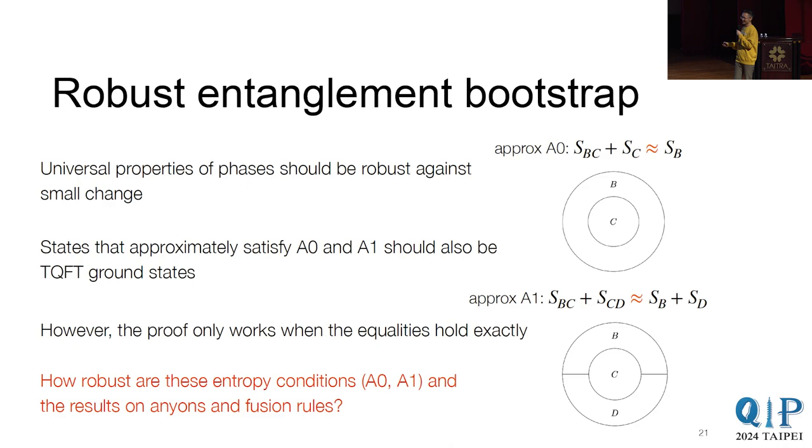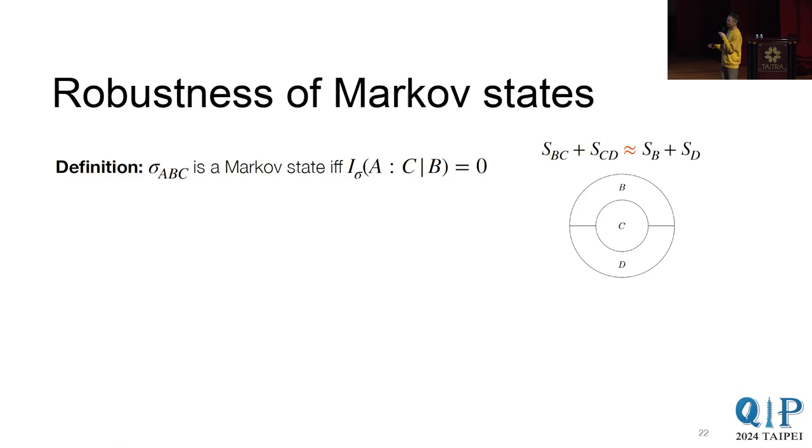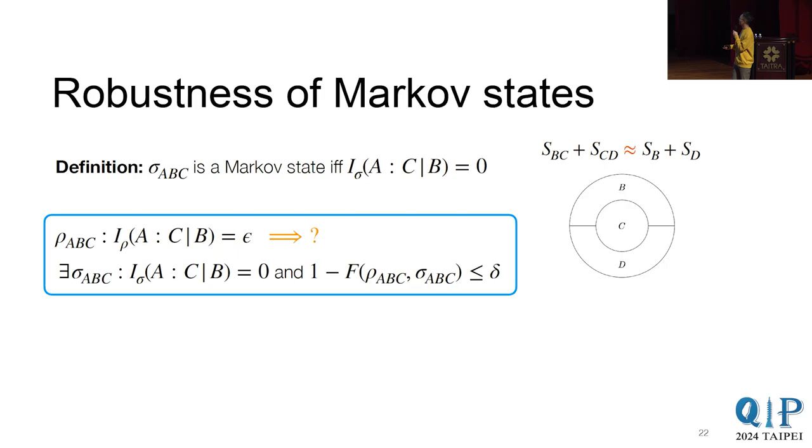However, their proof only works when things are exact because they really rely on these structure theorems that tells you how the state exactly looks like. So now the question is, can we show that these entropy conditions are actually robust? And so is the result about anyons and fusion rules. And usually these are called the robustness of Markov states. And so to remind you, a Markov state is a state where the conditional mutual information is zero. And same as saying the strong subadditivity saturates.